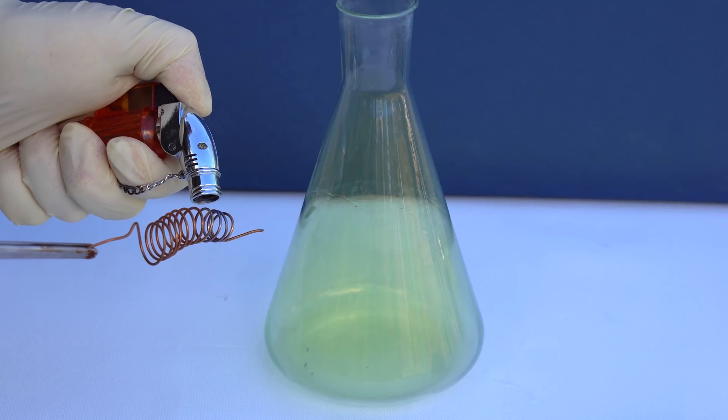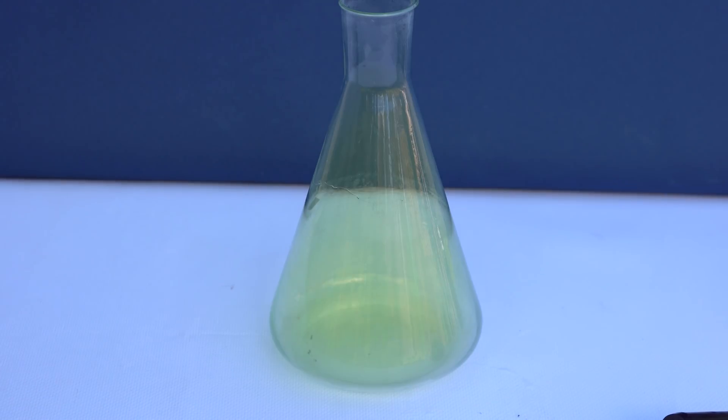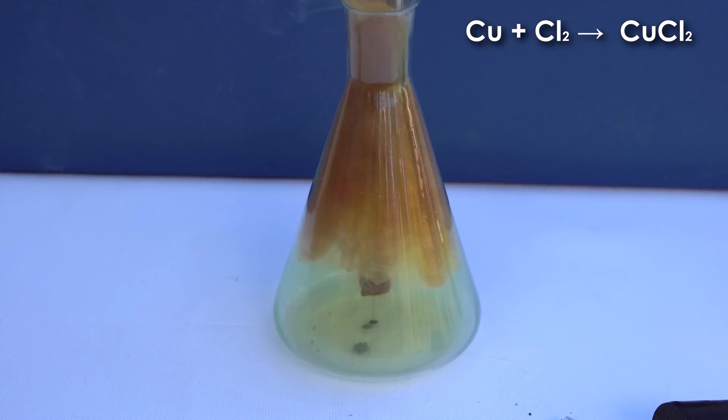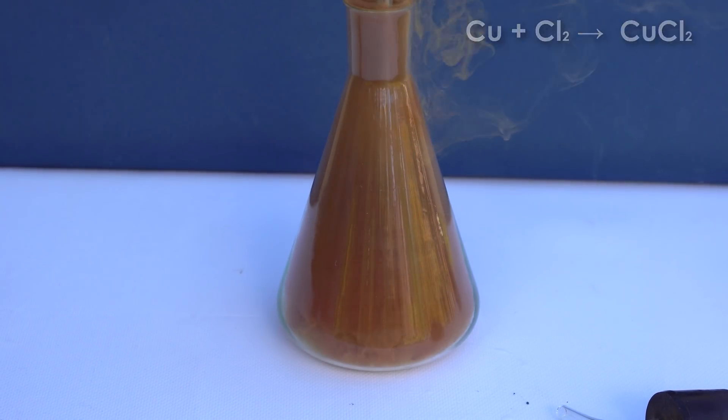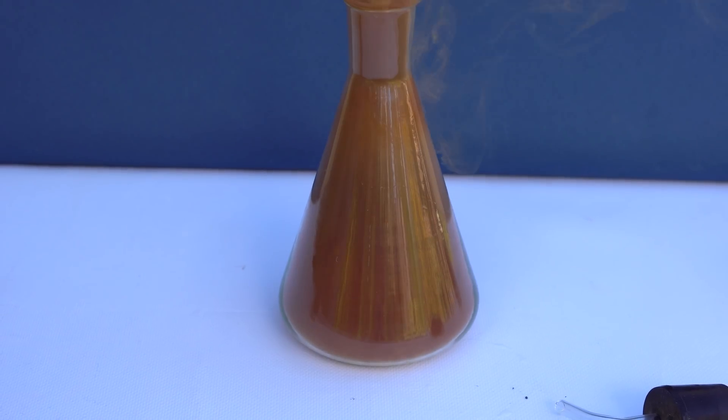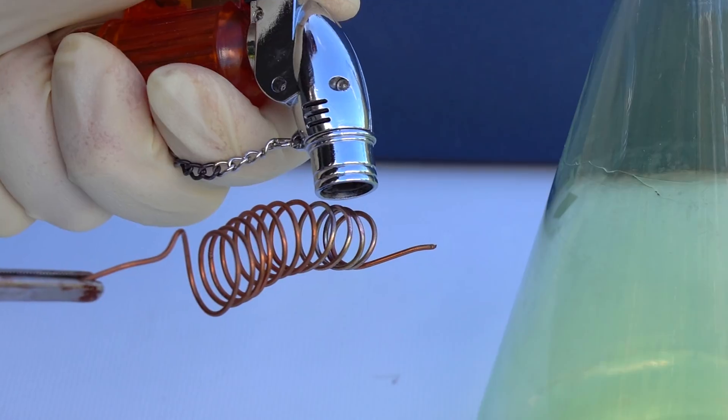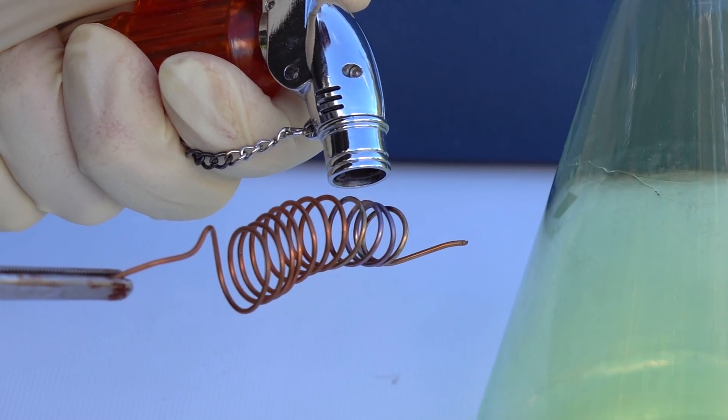Also, copper wire can burn in the atmosphere of chlorine. Once it is only slightly heated with a lighter and lowered into the flask with chlorine, copper immediately begins to oxidize to form copper chloride, which also forms brown smoke in the flask. However, with the oxygen in the air, copper does not react this way because of the formation of an oxide film on the surface of the metal.